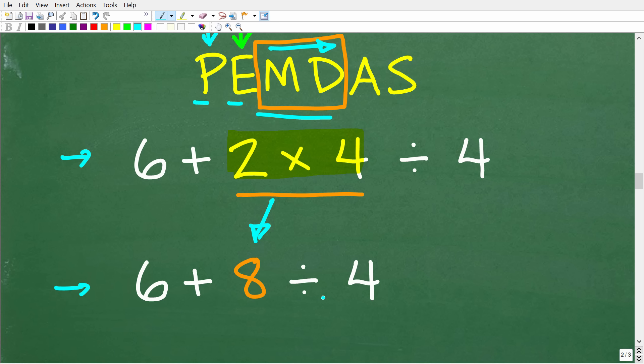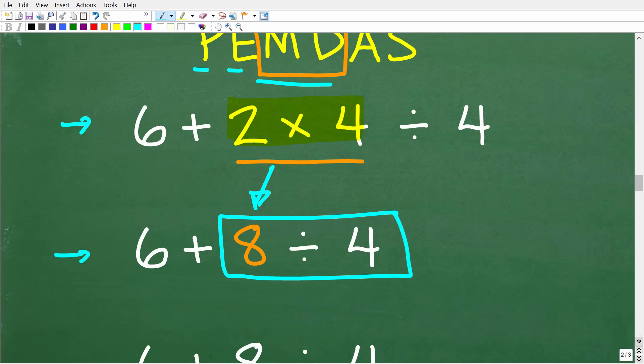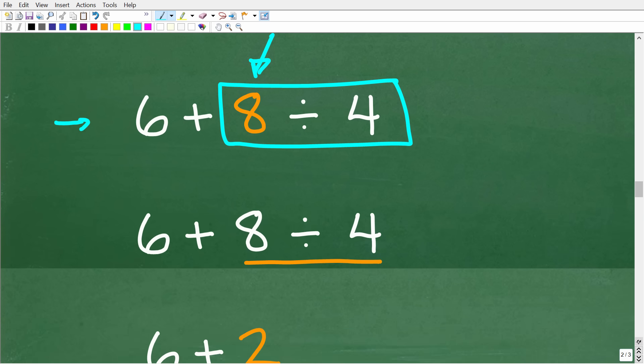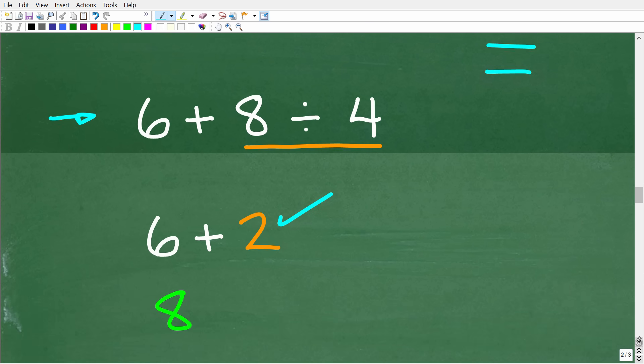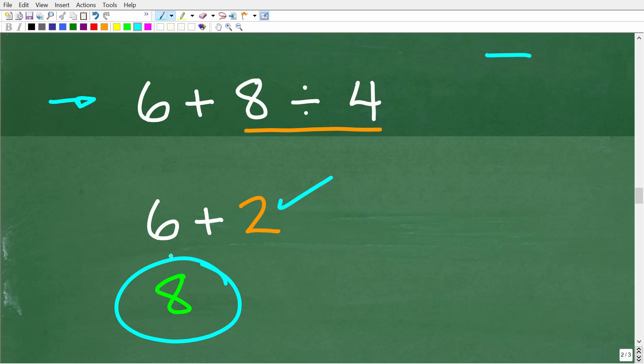Now we have addition and division. Of course, we're going to do all division before any addition. So now we have 8 divided by 4, which, of course, is going to be 2. And notice I'm just kind of writing this out one step at a time. This is the way you need to do it, even though this math is pretty easy. But if you don't take your time and write this out one step at a time, it's easy to make a mistake. So our final answer is going to be 6 plus 2, which, of course, is 8.